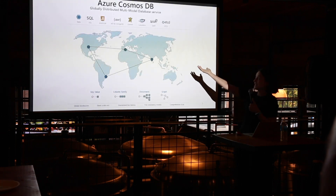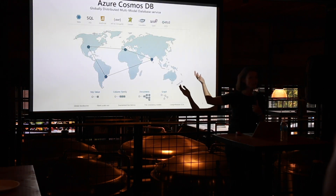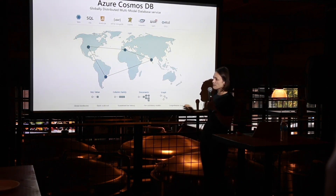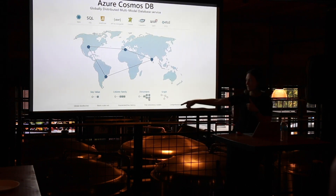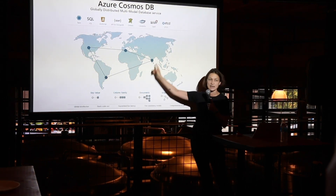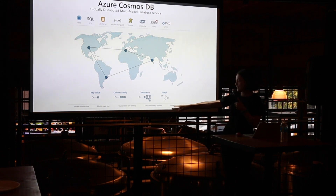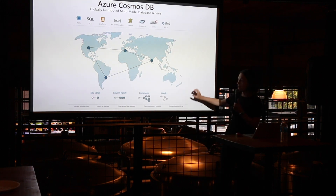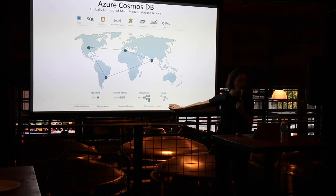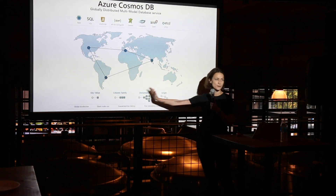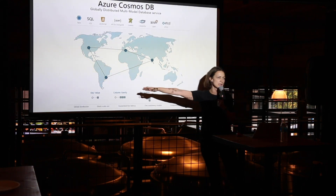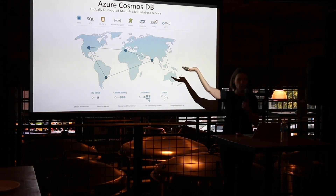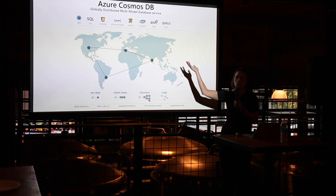Given all of these design goals, at the end of the day we have a core. The core of the service provides capabilities like global distribution, elastic scale-out, guaranteed low latency anywhere around the world, five consistency models, and SLAs. We also give you multiple data models to work with. Because they're built on top of the same core, all of these properties are applicable to graph, to JSON documents, to column family, key-value, and whatnot. To access your data, you should be able to pick the API of your choice, because we want to meet developers wherever they're coming from.